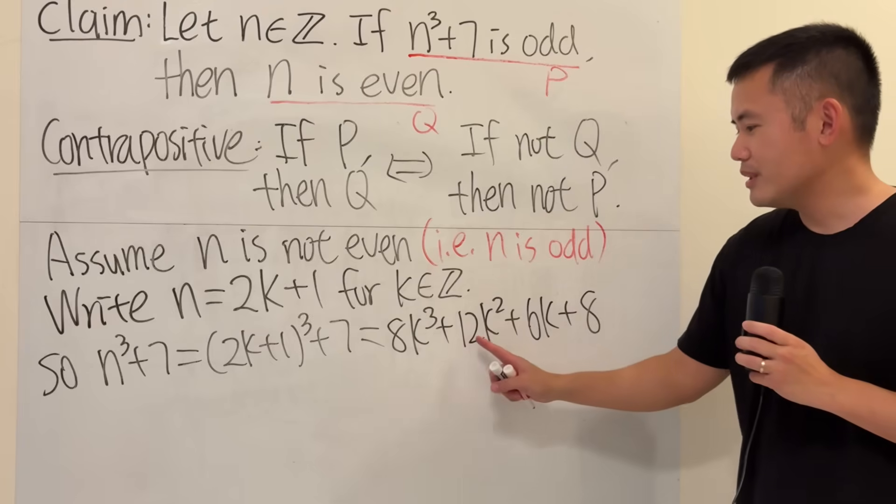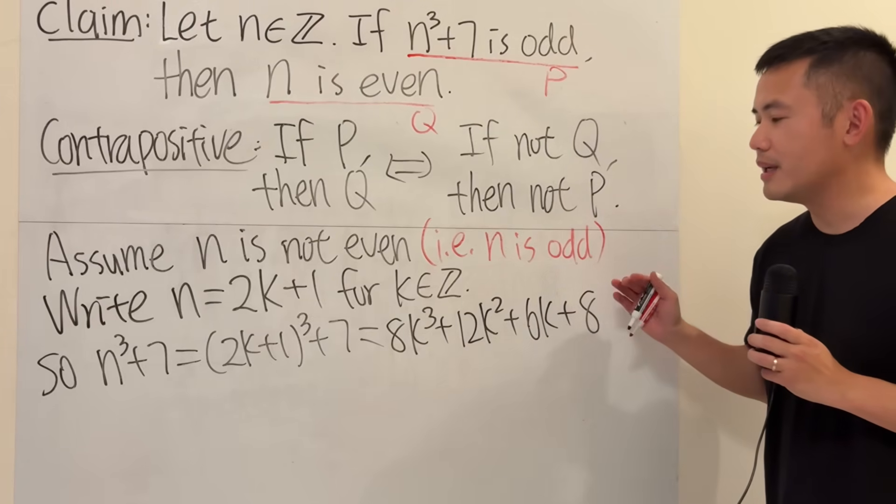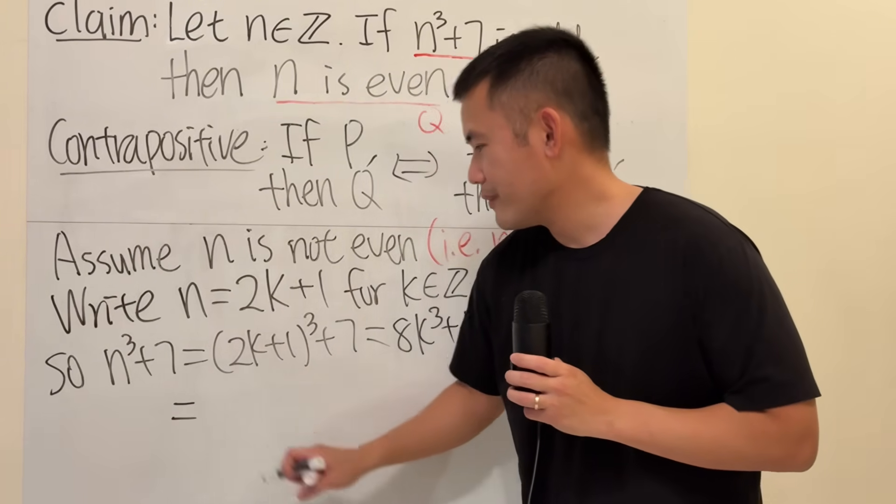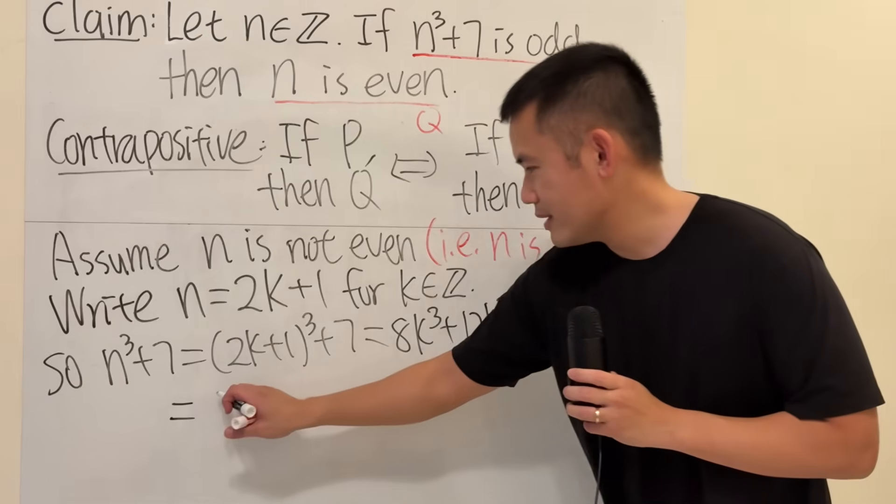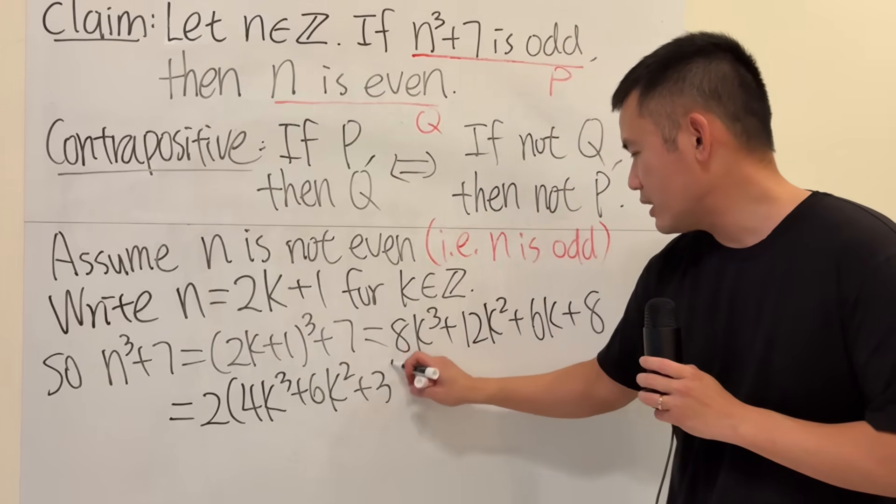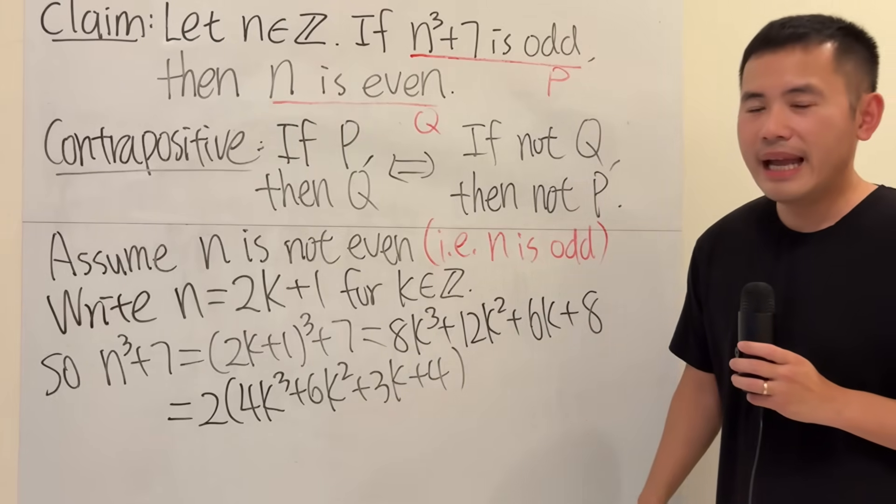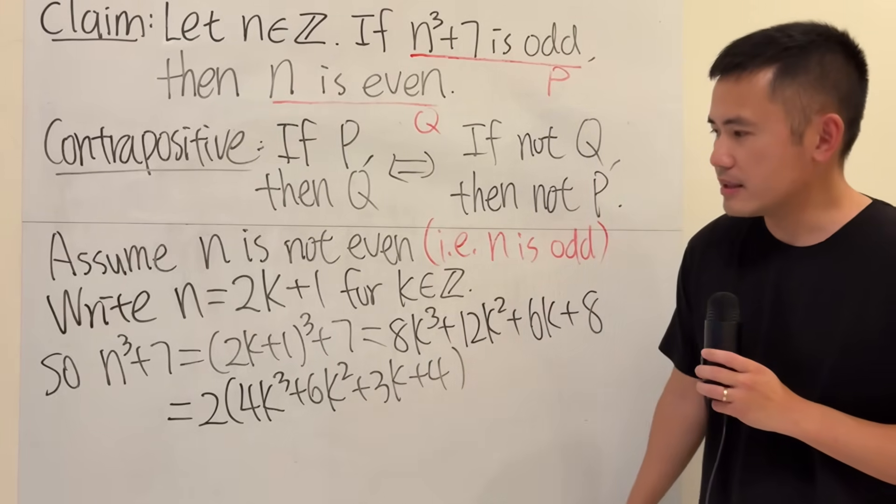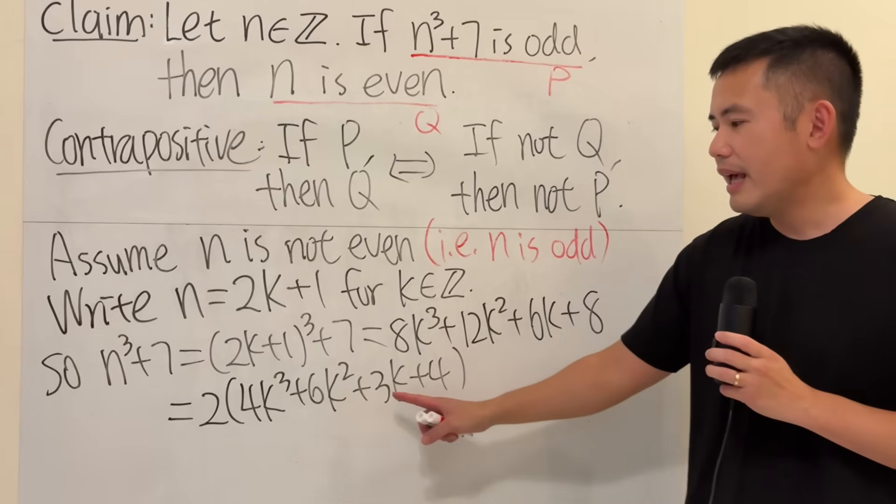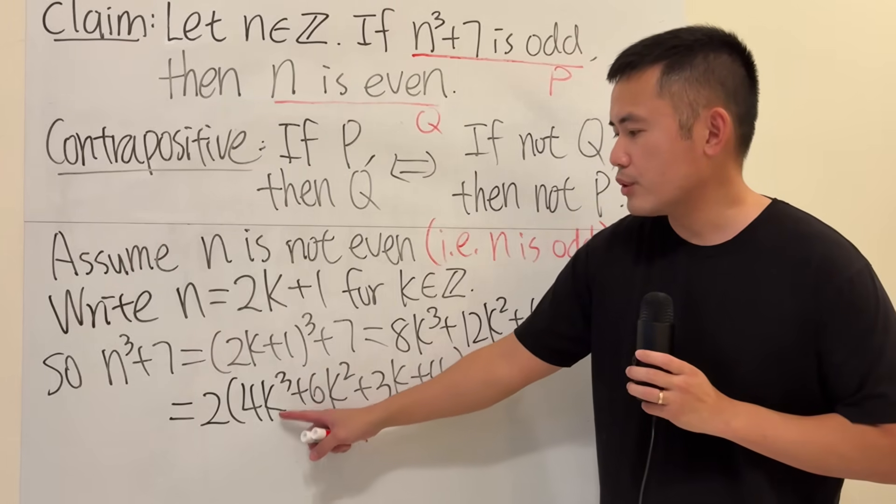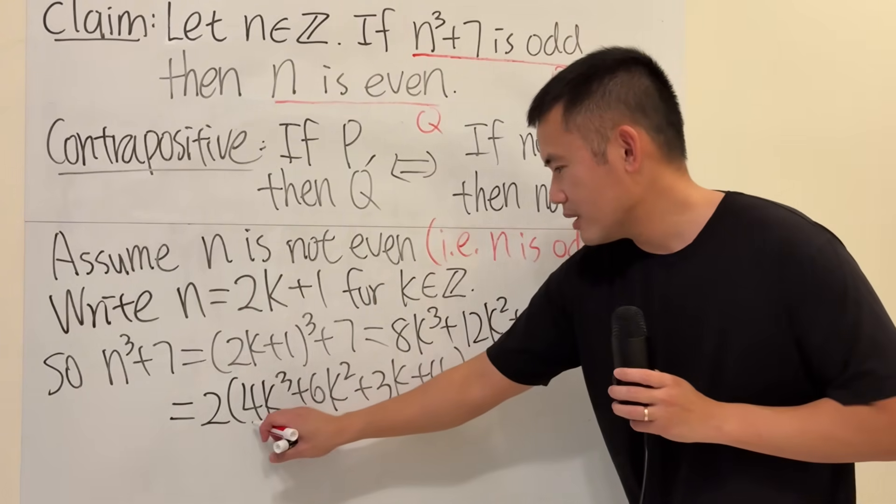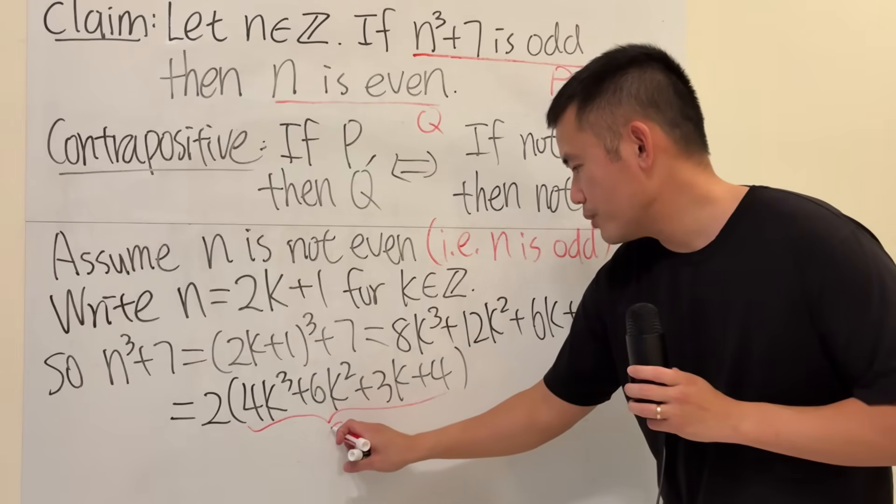Now, check this out. All the coefficients, including the constant terms, they are all even. So, we can do the following. This is just going to be factoring out 2. And then we will get 4k cubed plus 6k squared plus 3k plus 4. And the reason that we did that is because our goal is to show that this is equal to 2 times something right here. And because k is an integer, when you raise that to a whole number power and then multiply by a whole number, all this right here, this is still going to be an integer.